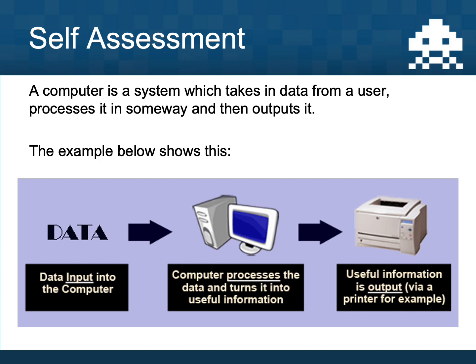Here is the sort of thing you should have come up with. A computer system is a system which takes in data from a user, processes it in some way, and then outputs it. The diagram should have looked something like the one shown on your screen — data going in on one side, processing in the middle, and useful information coming out the other side. If yours doesn't look quite like that, pause and update yours so that it does.